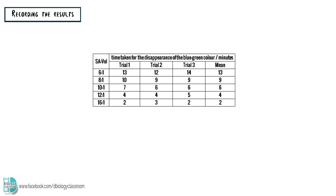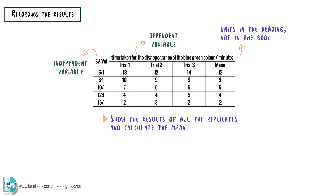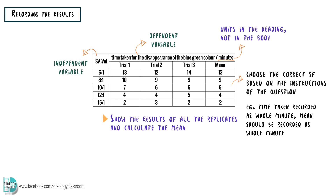Place the container containing hydrochloric acid in a thermostatically controlled water bath before you add it to the agar blocks. You should use a table to record the results. You must include the independent and dependent variables. Their units should be in the heading but not in the body of the table. Show the results of all the replicates and calculate the mean. When you record the mean, choose the correct significant figures based on the instructions of the question. For example, if the instruction asks you to record the time in whole minutes, the mean should also be in whole minutes.